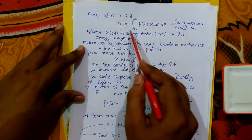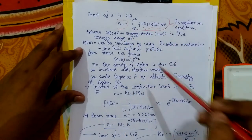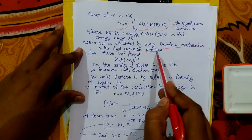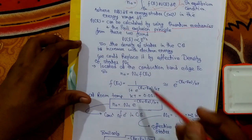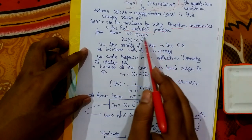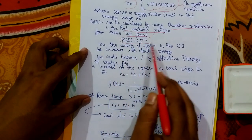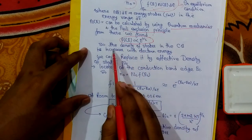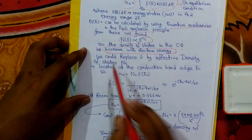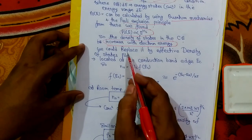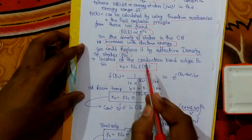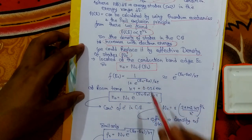If we solve this integral we can find the n₀ value, but solving it requires quantum mechanics and the Pauli exclusion principle, which we won't go into. Taking the result directly, we find that n is directly proportional to e^(1/2), meaning the density of states in the conduction band increases with electron energy. We can replace this with an effective density of states NC, so that n₀ = NC · F(EC).